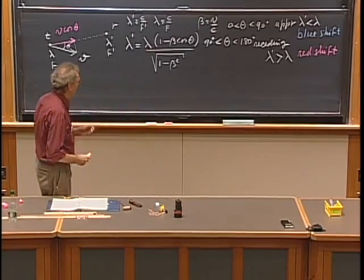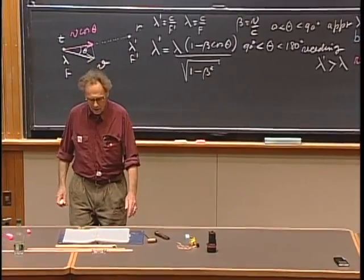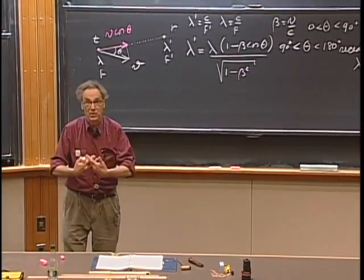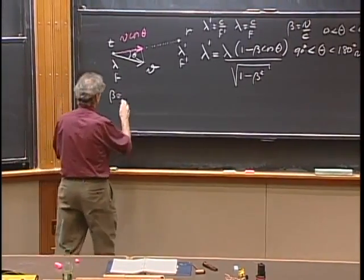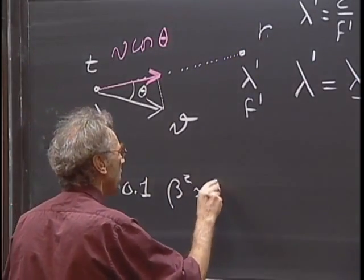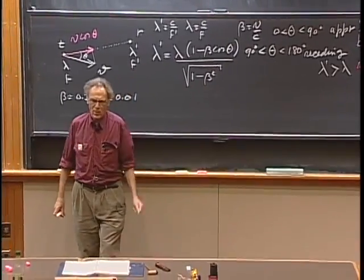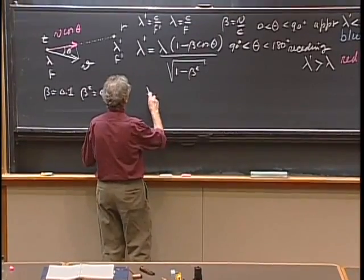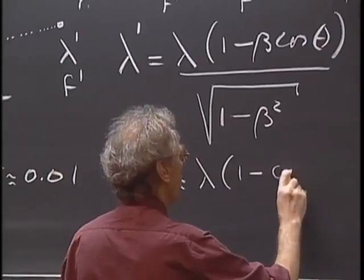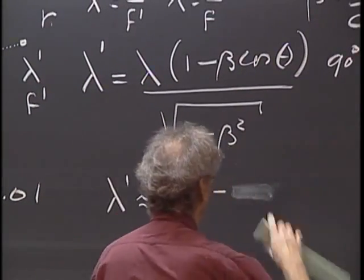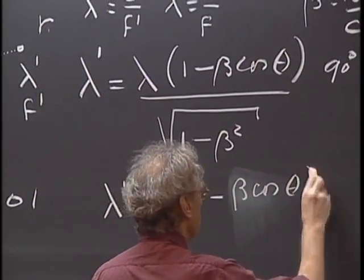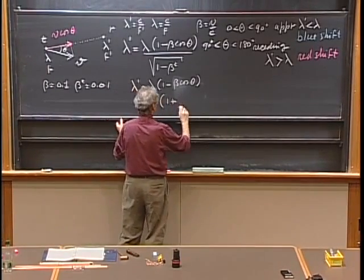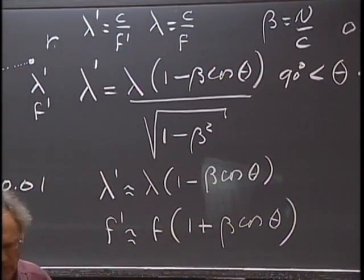If beta squared is much less than 1, you can drop the denominator. For example, if beta is 0.1 — 10% of the speed of light, which is 30,000 kilometers per second — then beta squared is approximately 0.01, and you can to a reasonable approximation ignore that term. In that case, lambda prime is approximately lambda times (1 minus beta cosine theta), and f prime is roughly f times (1 plus beta cosine theta). I'll leave you with proving that this is indeed a good approximation.